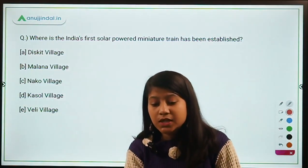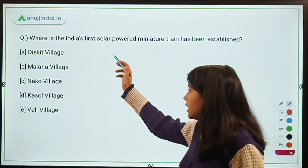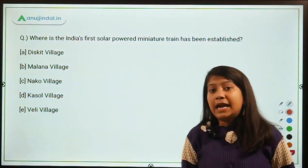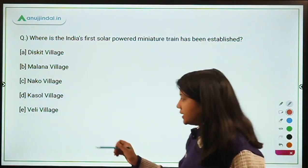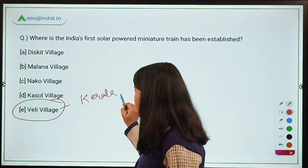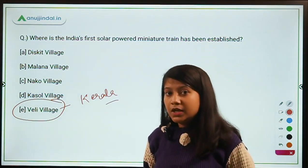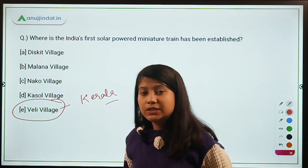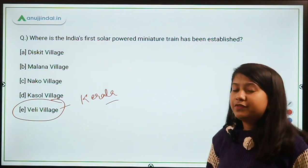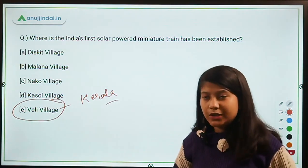Where has India's first solar-powered miniature train been established? Out of the five options — Dekshet, Malana, Nakko, Kasol, or Veli — the right answer is Option E, Veli village, which is in Kerala. This question has been discussed in Morning Tales already, so if you can recall it, that's great. This session will help you remember questions when the exam is around the corner.